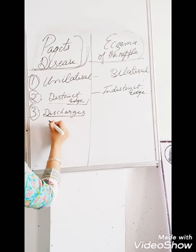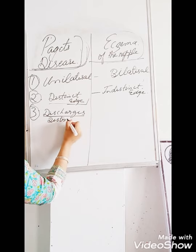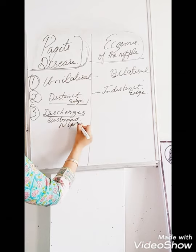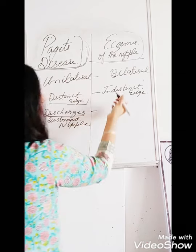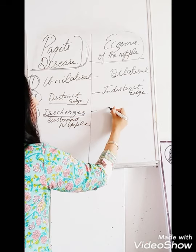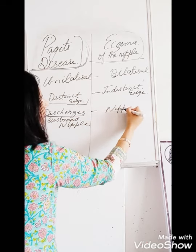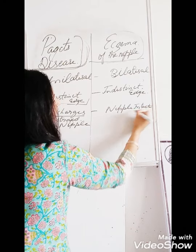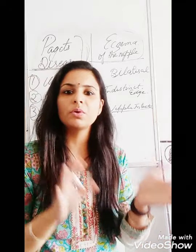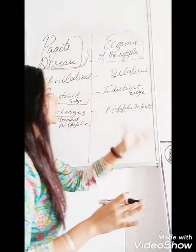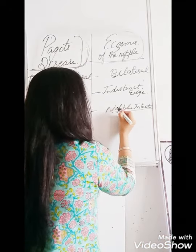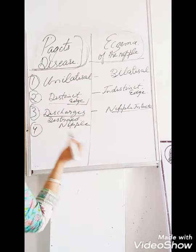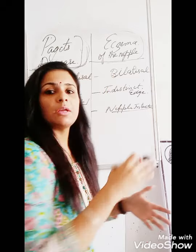The fourth difference involves nipple changes. In Paget's disease of the nipple, there are discharges from the nipple and the nipple is destroyed — there is destruction or ulceration of the nipple. Whereas in eczema of the nipple, the nipple is intact, meaning there is no harm or destruction; the nipple remains as usual.